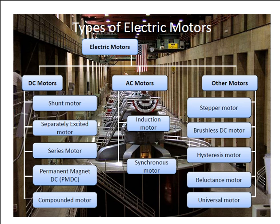Types of electric motors. Electric motors include DC motors and AC motors, among other types. In DC motors, the main types are: shunt motor, separately excited motor, series motor, permanent magnet DC motor (PM DC), and compound motor.